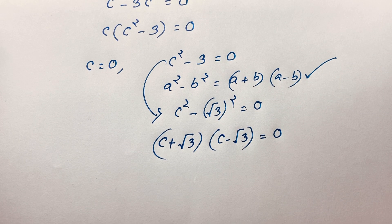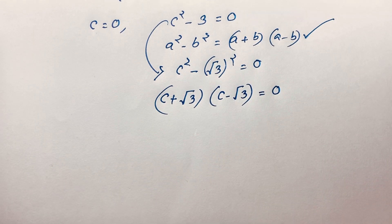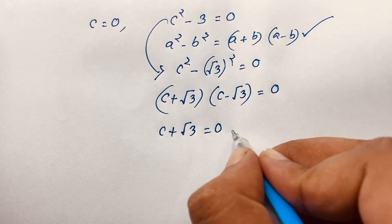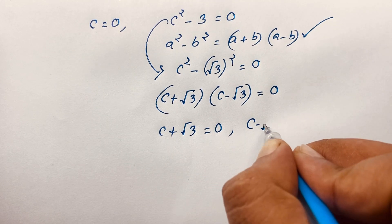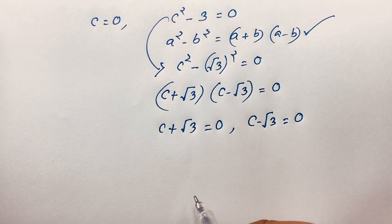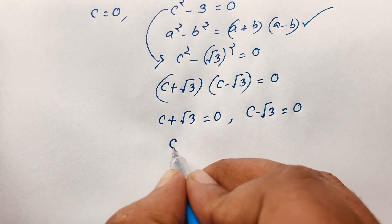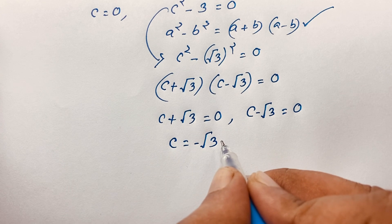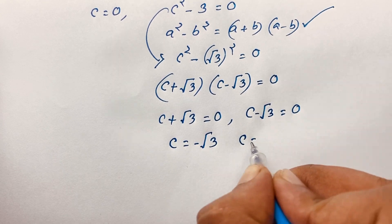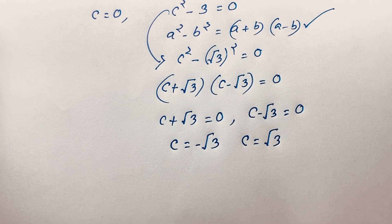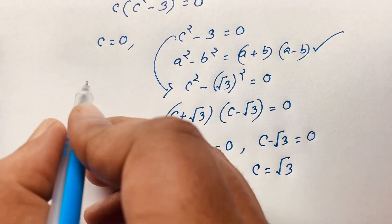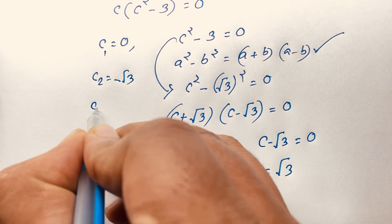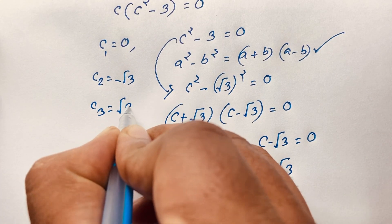Again, we will find out two cases. Our first case is C plus square root 3 is equal to 0, and in the other case, C minus square root 3 is equal to 0. So C is equal to minus square root 3, and here C is equal to square root 3. So we find our final answer: C₁ is equal to 0, C₂ is equal to minus square root 3, and C₃ is equal to square root 3.